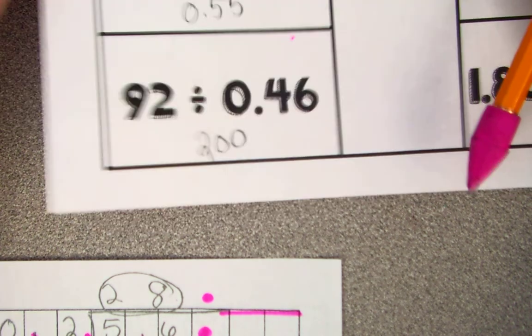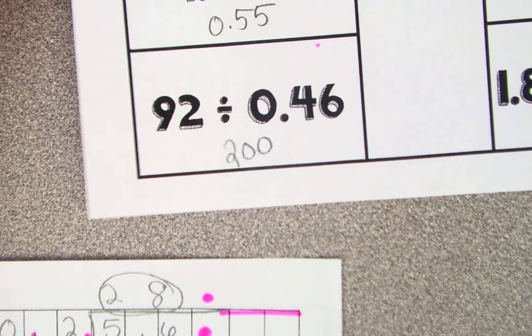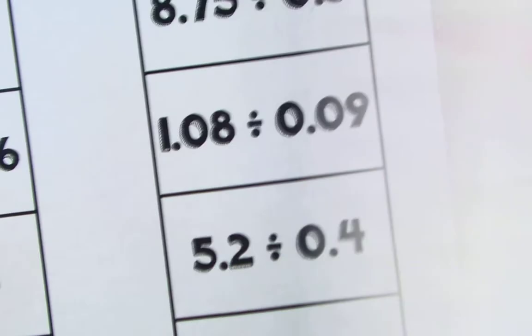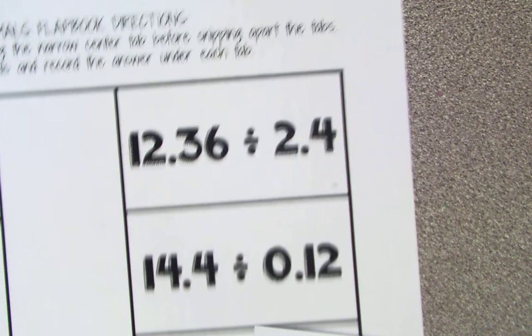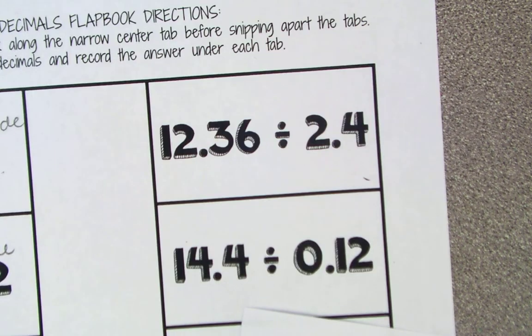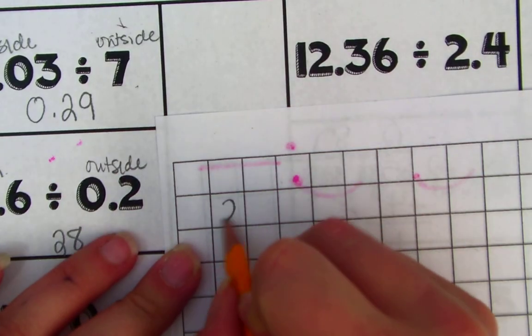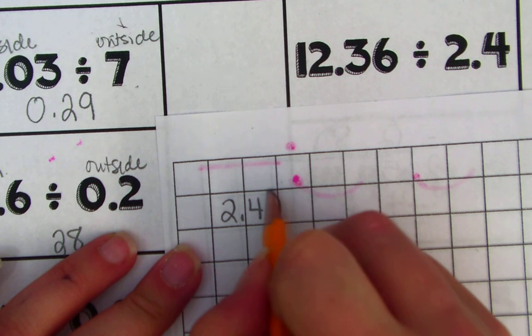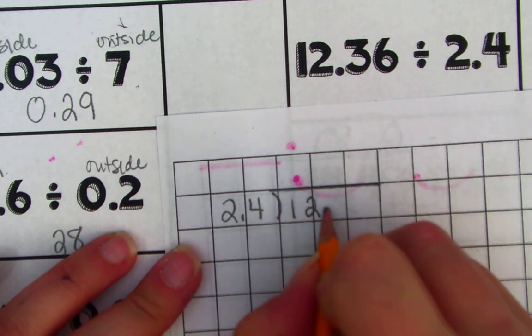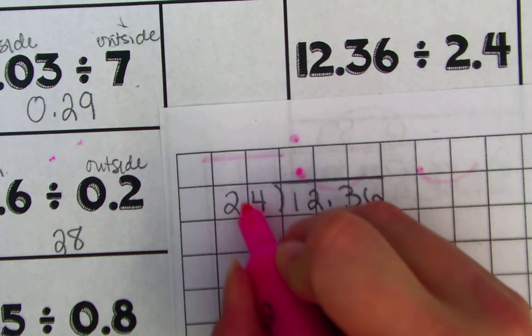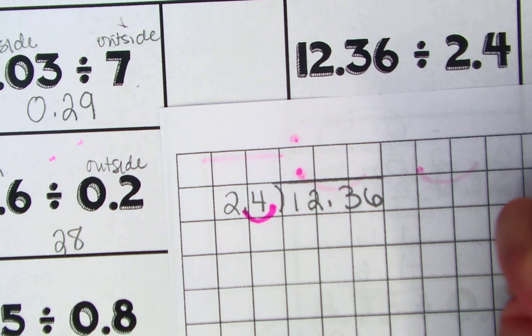Okay. Let's look at the next one. We're going to do 2.4 divided by 12.36. So here's my sheet. 2.4 divided by 12.36. Oh, decimals on both sides. I've got to move them. I need to move it how many times? One time. That becomes 24.